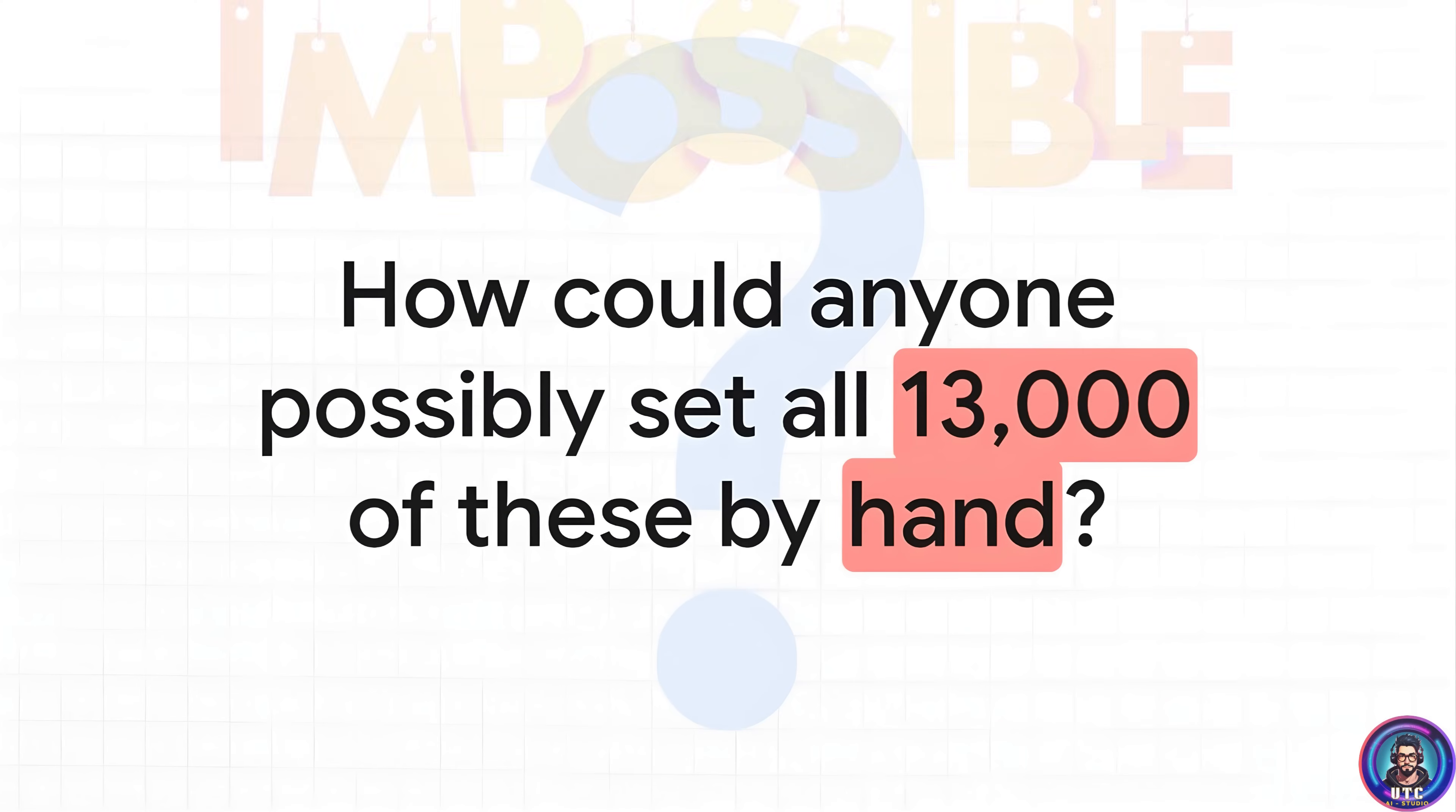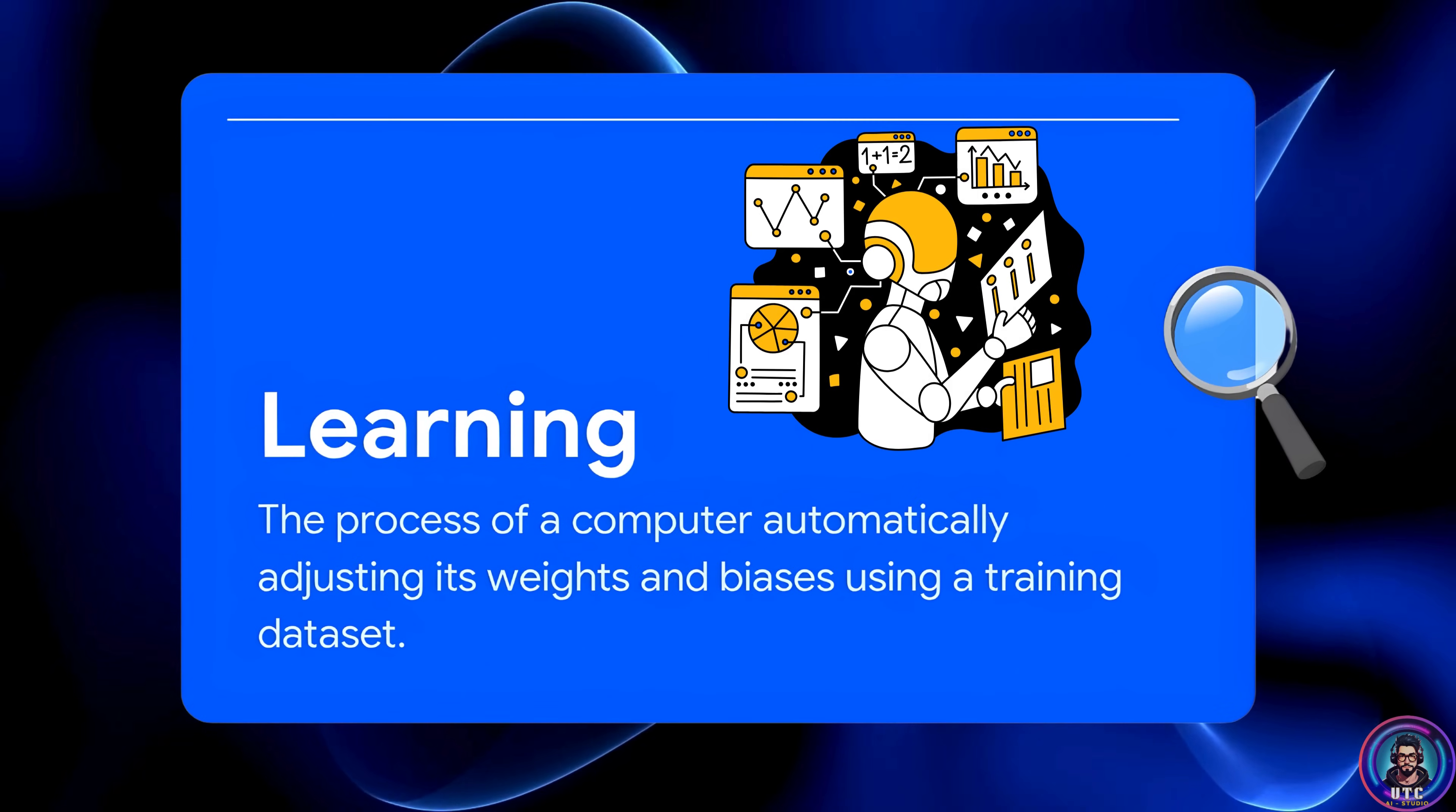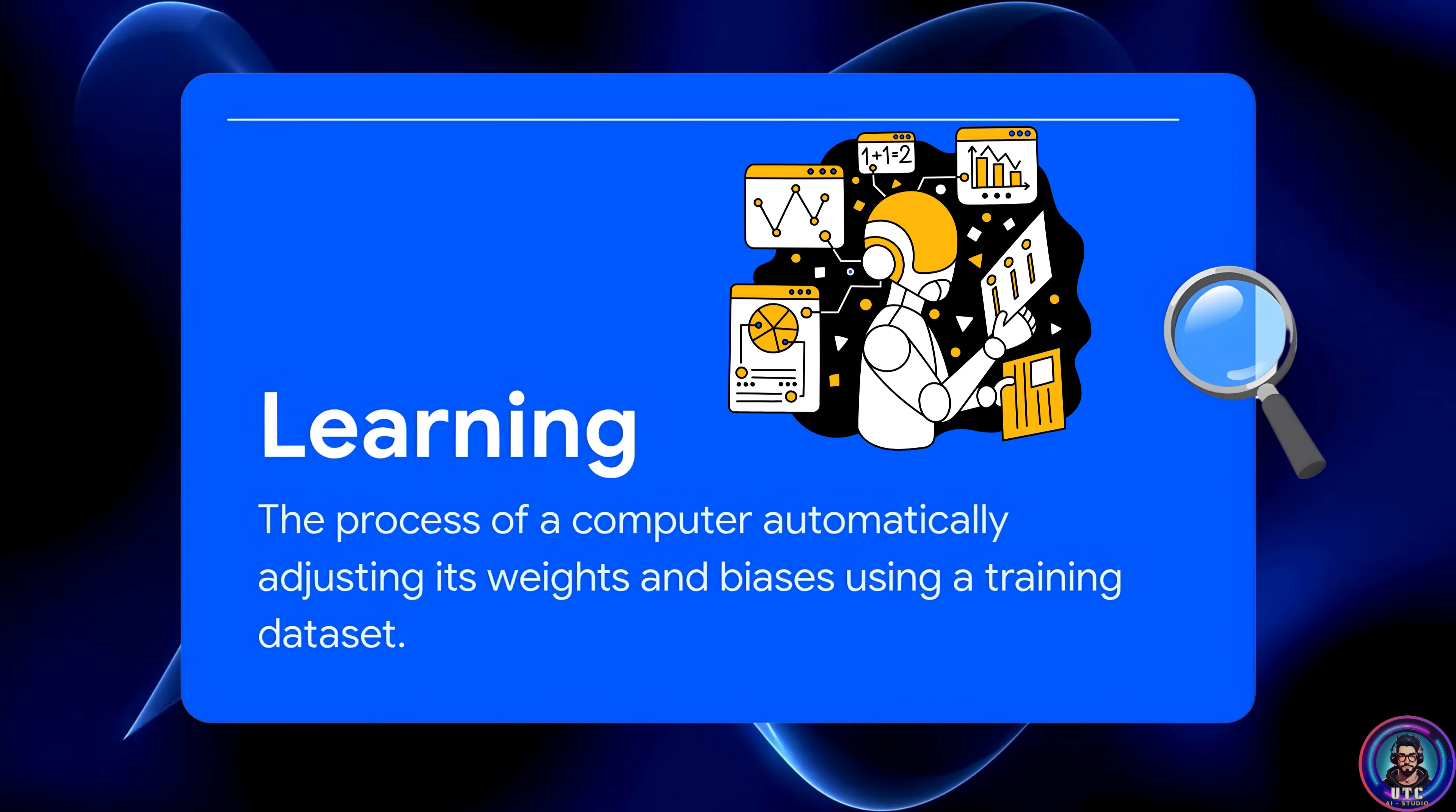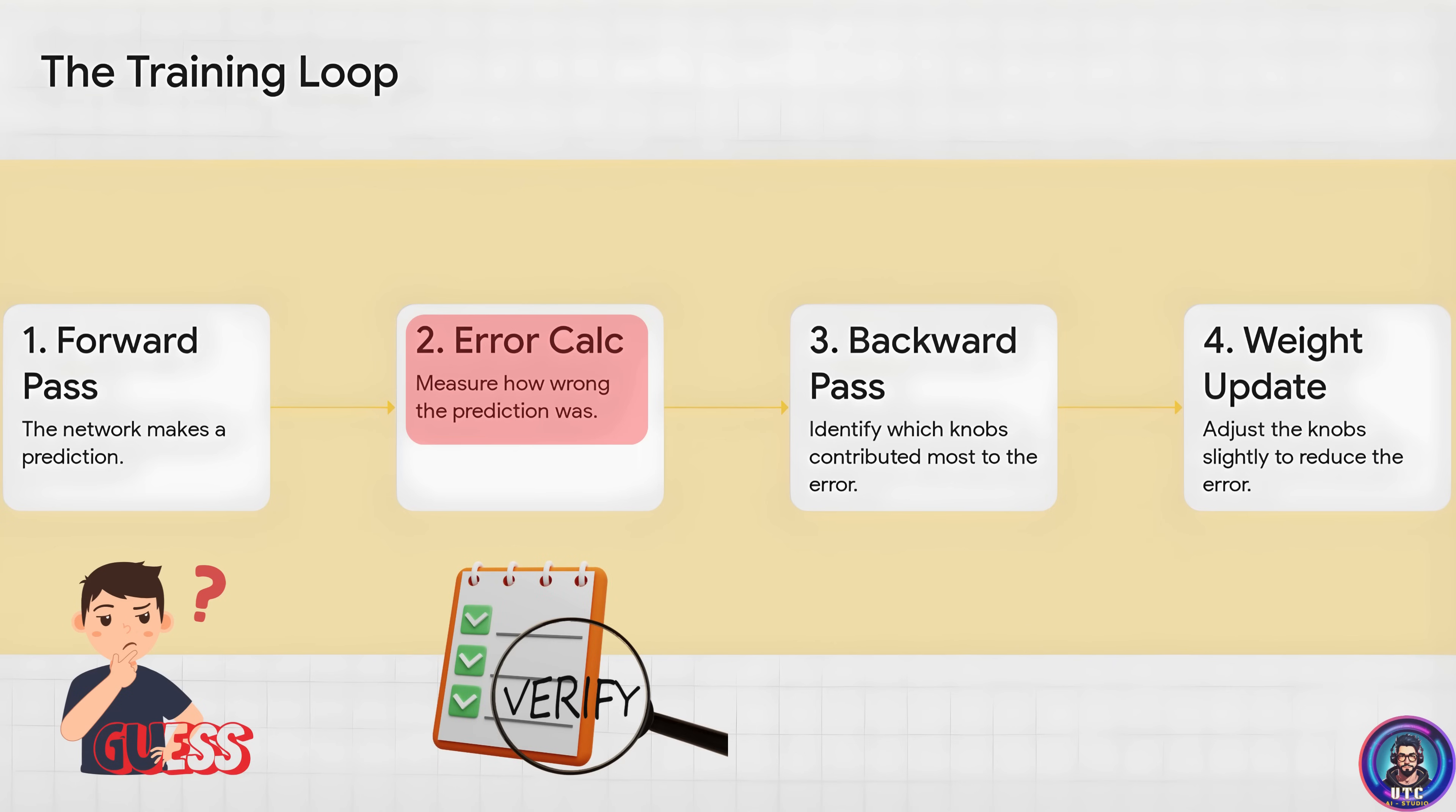I mean, trying to do that by hand, forget it. It would be completely impossible. So how in the world does it tune all 13,000 of those knobs correctly? Well, it does it through a very smart process called learning. It's a trial and error process. Basically, you show the network thousands and thousands of examples of handwritten digits. And for every single one, it makes a guess, gets feedback on how wrong it was. And then it makes a tiny little adjustment to those knobs to get just a little bit closer to the right answer next time. And that whole learning process happens in a constant four-step loop. First step, the network gets an image and makes a guess. We call that the forward pass. Second step, it checks its guess against the real answer and calculates how wrong it was. That's the error.